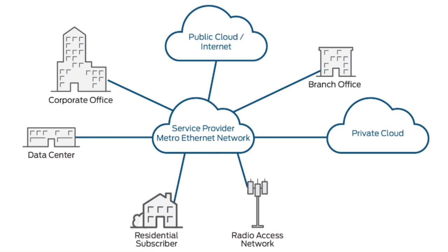MAN, or Metropolitan Area Network, covers a larger area than LAN and connects two or more computers located in different buildings or different cities. An example is telephone companies that provide high-speed DSL lines to customers, or cable TV networks within a city.